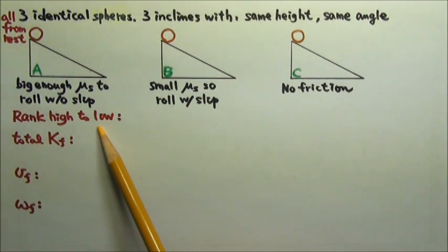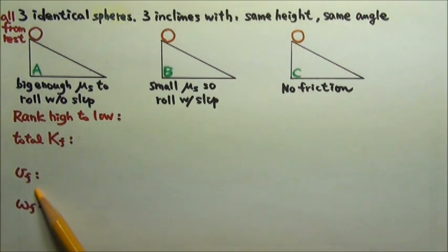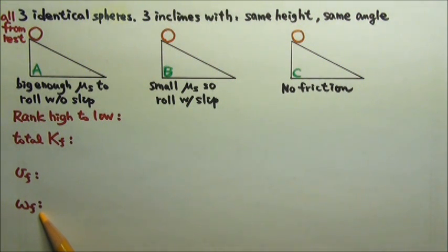Rank from high to low: the total kinetic energy, the speed, and the angular speed of the spheres when they reach the bottom of the inclines.